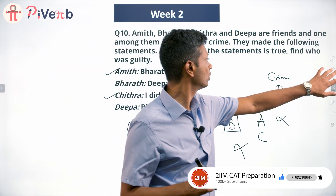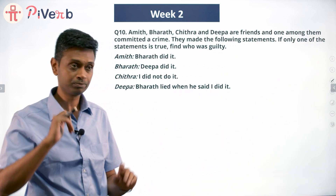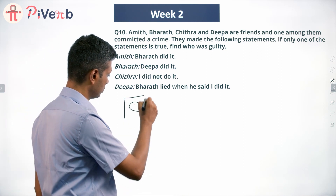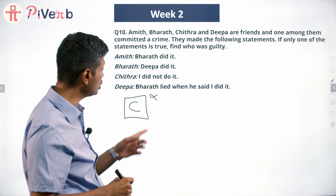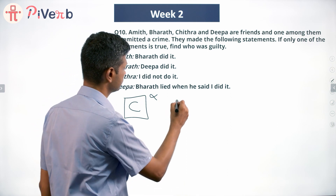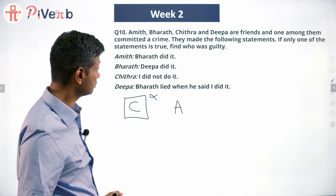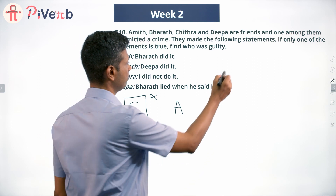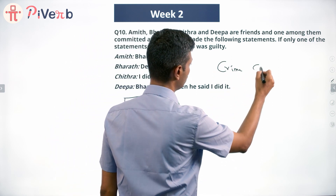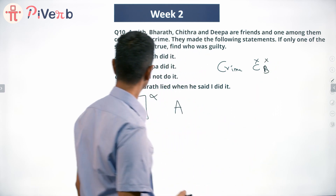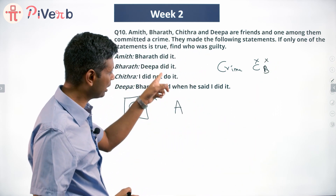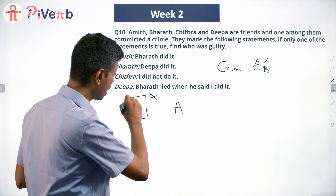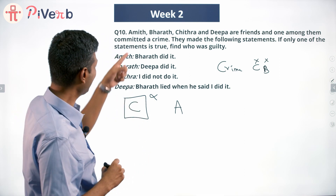The only true speaker cannot be A, cannot be B. Let's move to C. Chitra says 'I did not do it' — we are assuming only this is true. Going to A: Bharat did it — that has to be false, so Bharat did not commit the crime. Going to B: Deepa did it — that should also be false. And C is saying she did not do it.